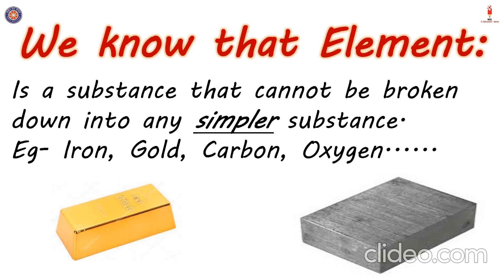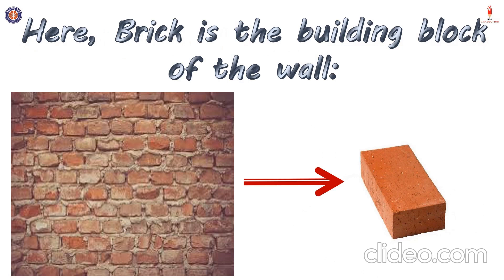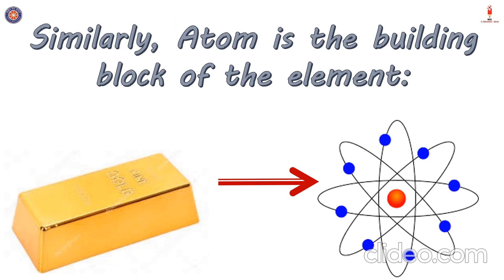Now everything around us is made up of elements, but a question comes into mind: what are elements made up of? Here we can see that the wall is made up of bricks. The bricks placed one after another make up the entire wall eventually. Just like the wall is made up of bricks, in the same way the element is made up of atoms. So the answer is that an element is made up of small particles known as atoms.